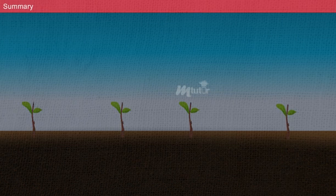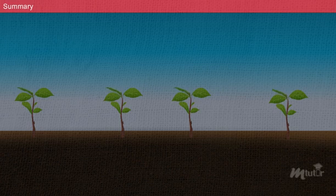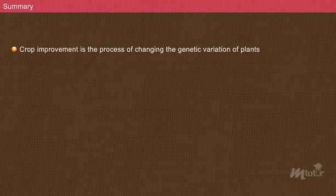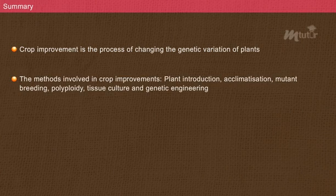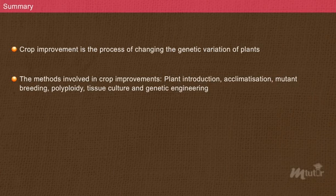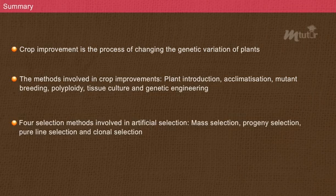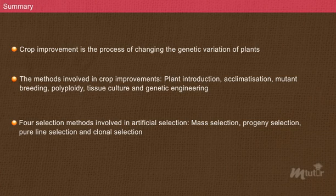Summary: let us do a recap of what we have learnt so far. Crop improvement is the process of changing the genetic variation of plants. The methods involved in crop improvement are plant introduction, acclimatization, mutation breeding, polyploidy, tissue culture, and genetic engineering. The four selection methods involved in artificial selection are mass selection, progeny selection, pure line selection, and clonal selection.